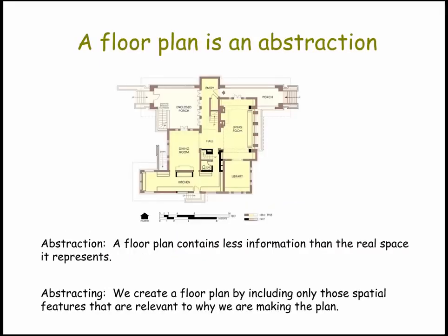A floor plan is another example. Notice how this floor plan contains much less information than the space it represents. All we really see are the relationships between the living room, the dining room, the hall, and so on. We don't see any furniture or carpets. And again, we create this kind of abstraction by including only those details that are useful to us.